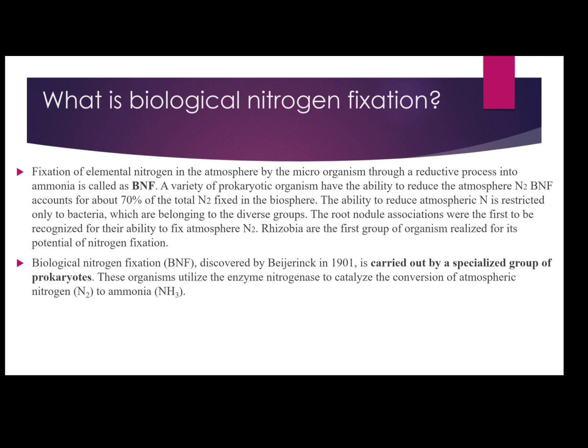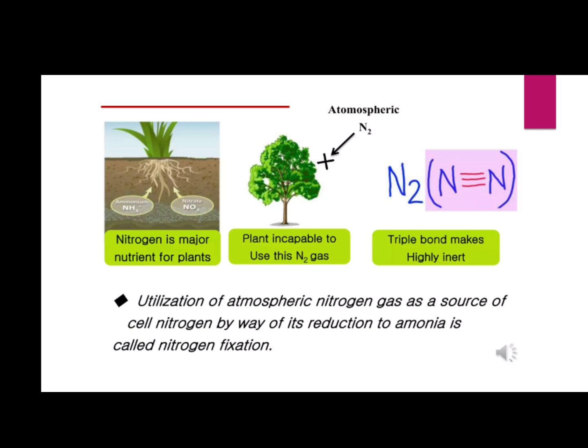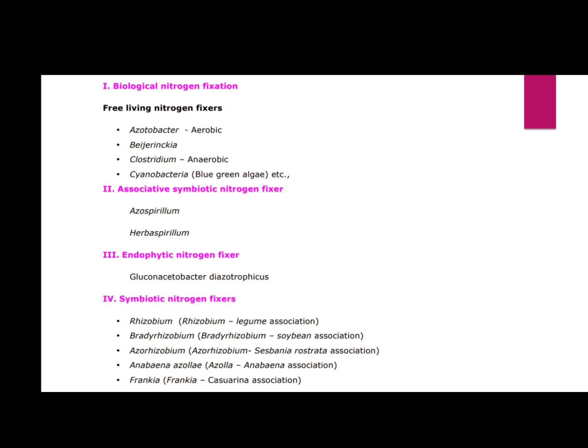Biological nitrogen fixation was discovered by Beijerinck in 1901. Nitrogen is a major nutrient for plants present in the soil, and plants are incapable of using atmospheric nitrogen because of the triple bond making it highly inert. Examples of free-living nitrogen fixers include Azotobacter and Clostridium. There are also associative symbiotic nitrogen fixers, endophytic nitrogen fixers, and symbiotic nitrogen fixers — importantly Rhizobium, which forms a symbiotic relationship with leguminous plants.